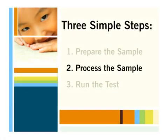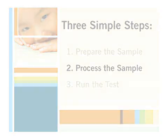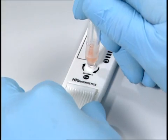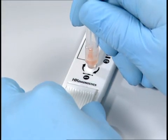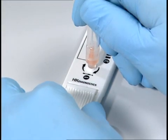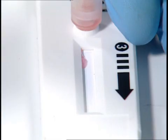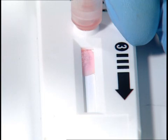Second, process the sample. Insert the tip of the sample reagent assembly into the cartridge. Listen for an audible click — the cartridge window will change color.